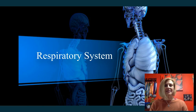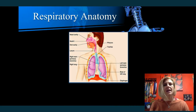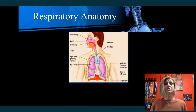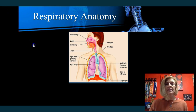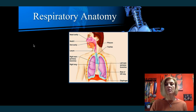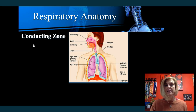Welcome back anatomy students. Today we want to talk about the respiratory system. As with any system, our objectives are basically to identify the pieces and parts and what they do. First, let's go through the list of all of the structures in the respiratory system, and then later we'll talk about what the purpose of each of them is.